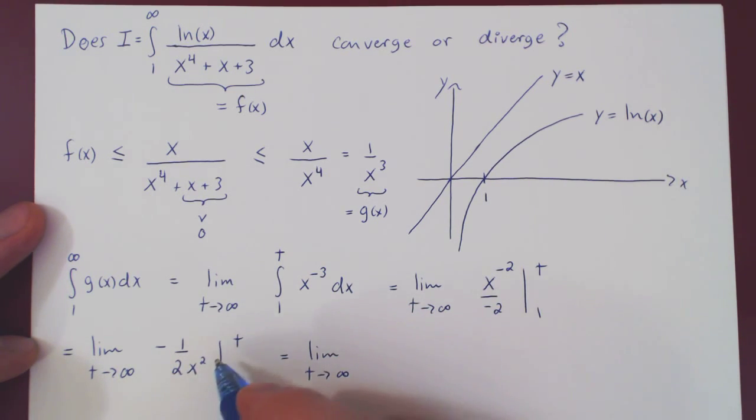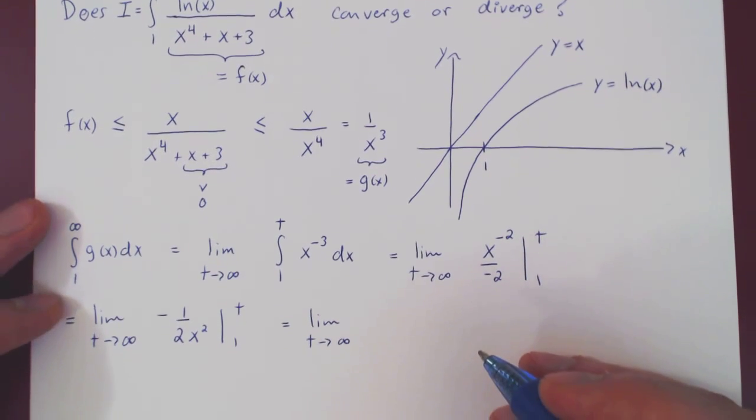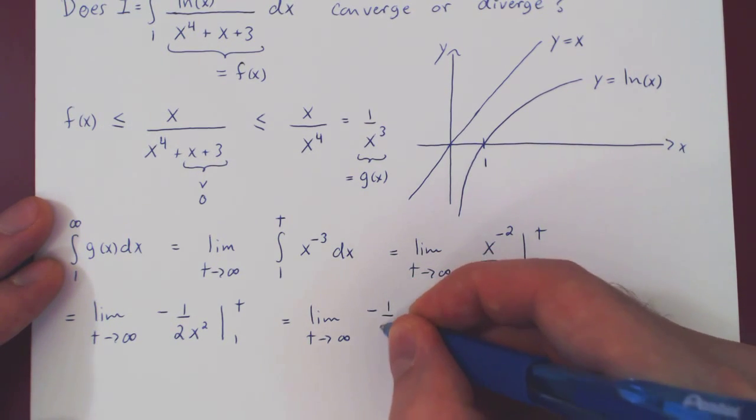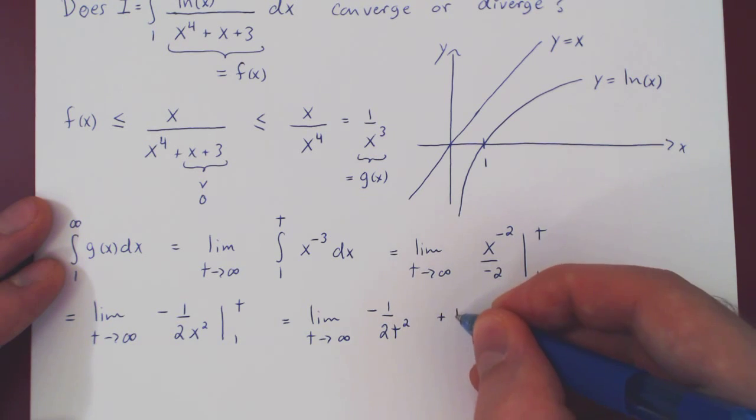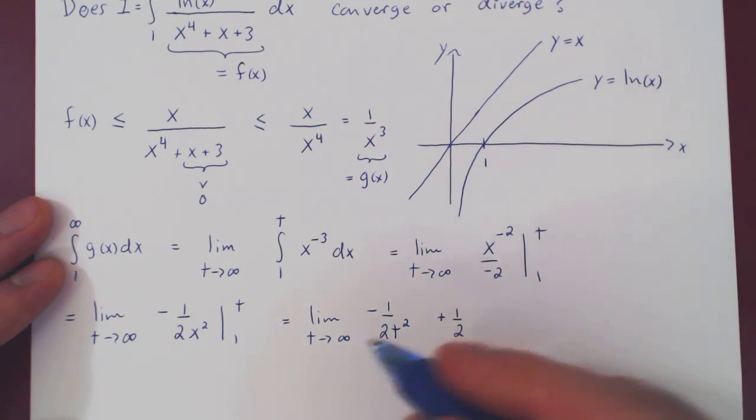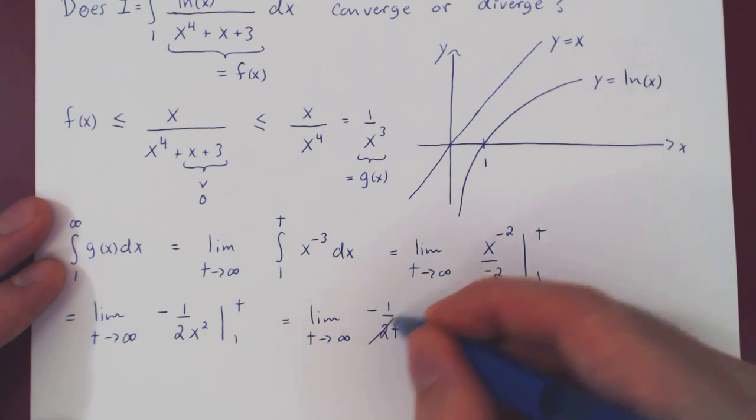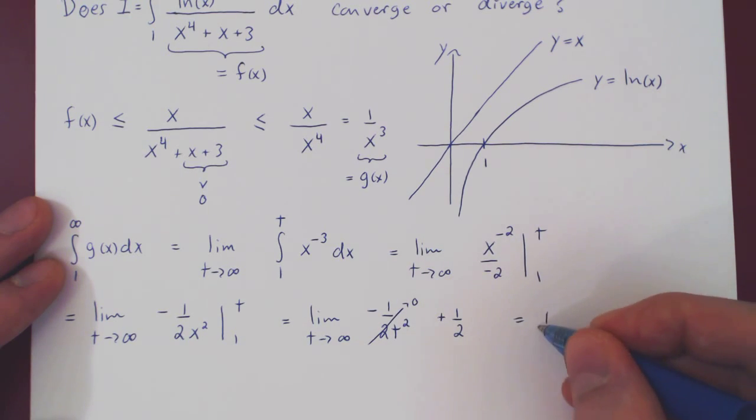From 1 to t. So, our anti-derivative when x is t, negative 1 over 2t squared, minus minus plus the anti-derivative at 1. 1 squared is 1, so we'll be left with plus 1 half. Well, as t goes to infinity, 2t squared goes to infinity, and so negative 1 over infinity shrinks to 0. And we're left with 1 half.